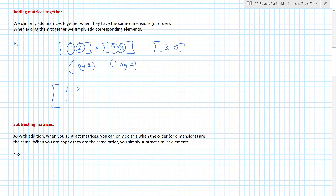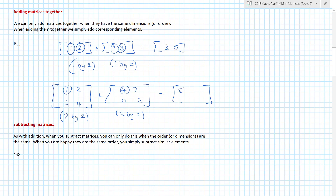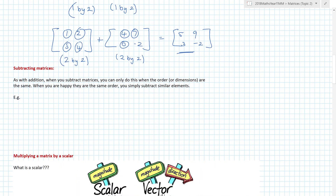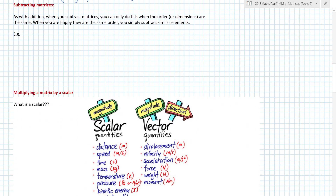Now: 1, 2, 3, 4 and 7, 0, −2 — because we can actually have negative numbers. Can they be added together? Yes, because this is a 2 by 2 and this is a 2 by 2, so my result is going to be a 2 by 2. One plus four is five, two plus seven is nine, three plus zero is three, and four plus minus two is minus two.